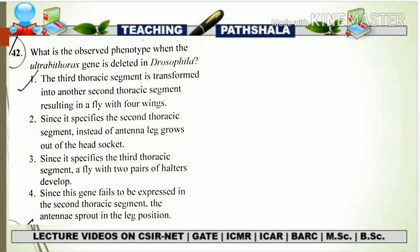The mutation of the ultrabithorax gene results in the transformation of the T3 segment into a T2 segment. Along with that, there will be a phenotypic effect in that transformed T3 segment — that is, there will be a duplication of wings. So in the normal case, the fly has one pair of wings, but in the ultrabithorax mutation case, there will be two pairs of wings, meaning four wings total.